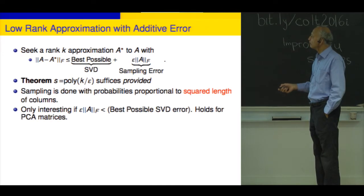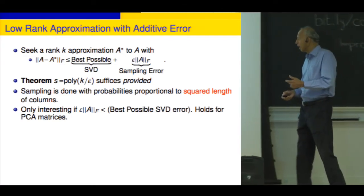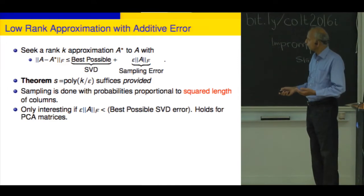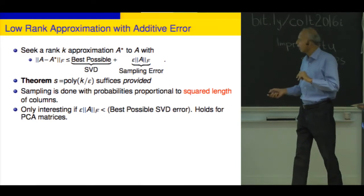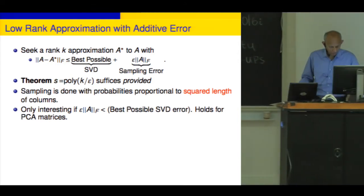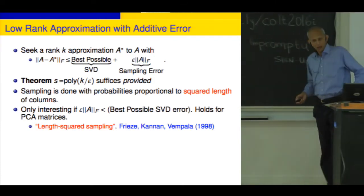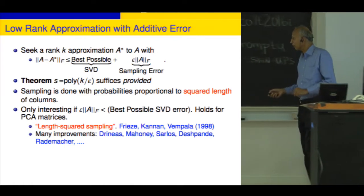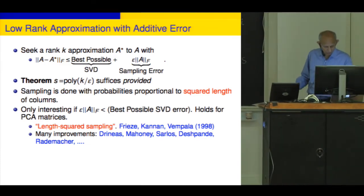Length squared sampling was introduced in a 1998 paper, where this theorem originates. It has since found quite a lot of applications and many improvements. There is also an alternative scheme of reducing matrix complexity due to Achlioptas and McSherry, where you draw a sample of entries, set unsampled entries to zero, and scale sampled entries. This doesn't reduce the dimension but makes the matrix sparser and easier to compute. There are results known for that kind of sampling as well.